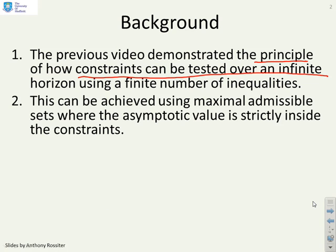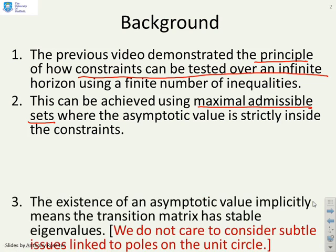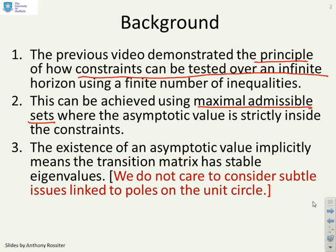We used the concept of a maximal admissible set, assuming that the asymptotic value was strictly inside the constraints. The existence of an asymptotic value implicitly means that the transition matrix has stable eigenvalues. We're not going to look at problems where some poles are on the unit circle.